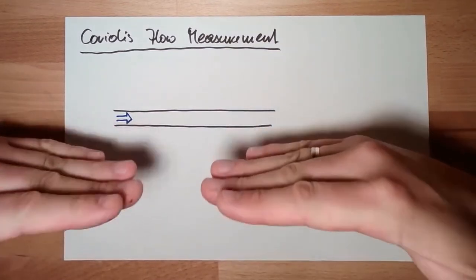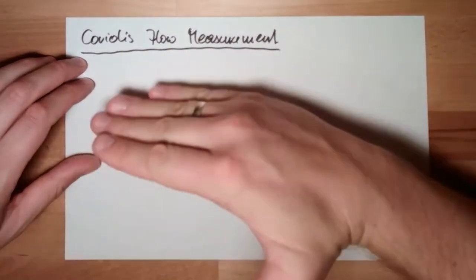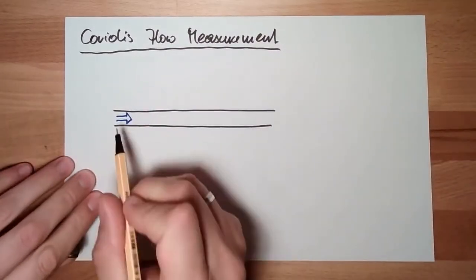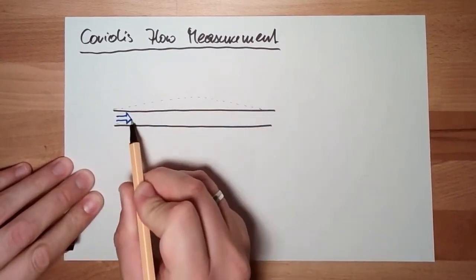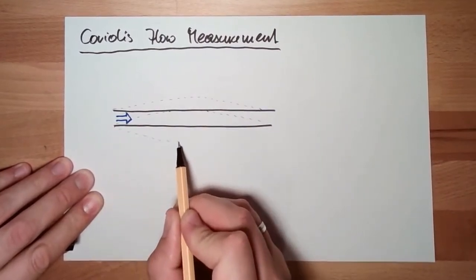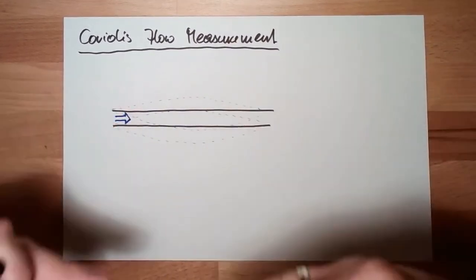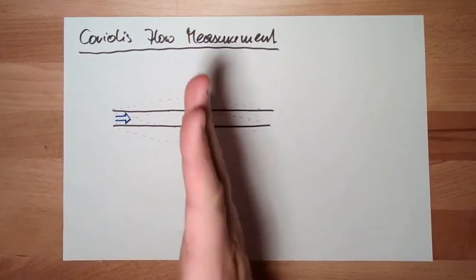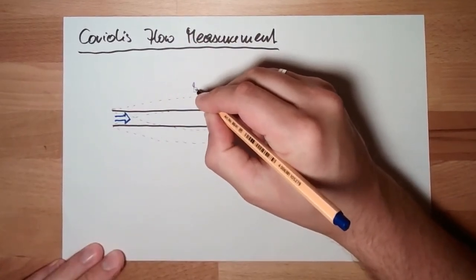If this is in standstill and it just let swing this tube, then it will swing in this direction and then the other direction, and it will always be the same. The swinging is 90 degrees to the flow direction.